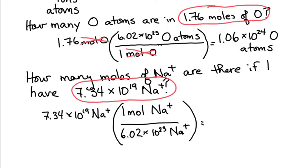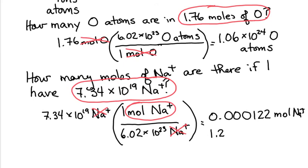Make sure things cancel. Single sodium ions cancels with single sodium ions. We're going to be left with moles of sodium ions. 7.34 times 10 to the 19th divided by 6.02 times 10 to the 23rd gives us 0.000122 moles of sodium ions. Or you could write it in scientific notation.